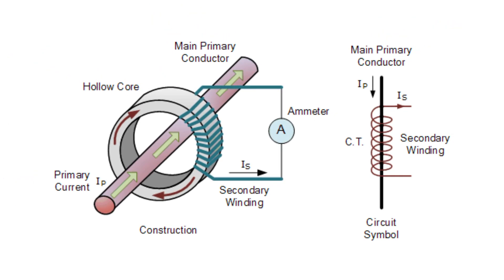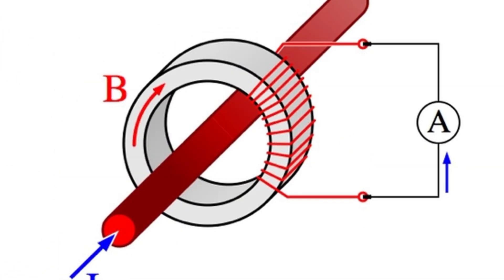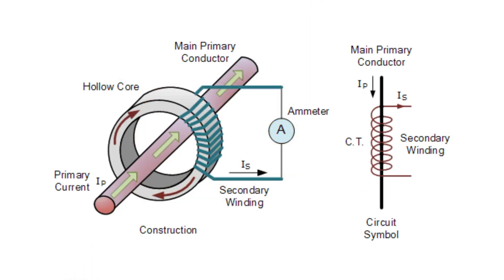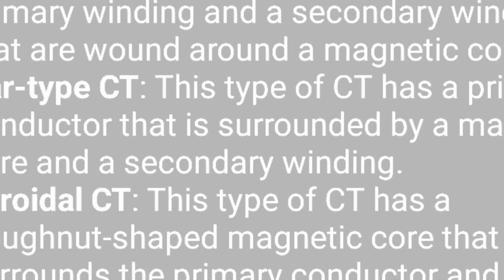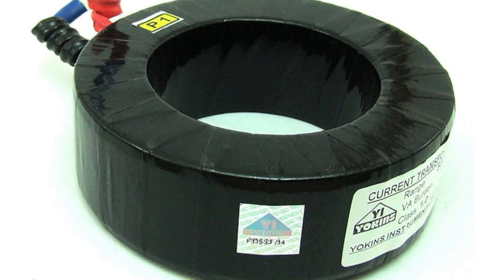winding, which results in a lower current that is proportional to the higher current in the primary winding. In this way the CTs work. Mainly there are three types of CTs. The first one